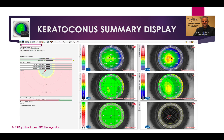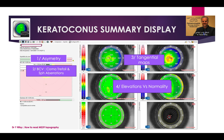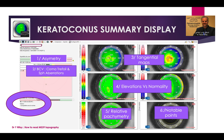The keratoconus summary display is an artificial intelligence tool to help us diagnose keratoconus and ectatic corneal diseases. It will study the asymmetry of the tangential maps, the BCV, coma, trifol and spherical aberrations, tangential maps, anterior and posterior elevation maps compared to normality. The reference surface is not a best fit sphere but a normal cornea surface. It also studies relative pachymetry map and notable points, and the conclusion can be normal, abnormal, keratoconus, or others.